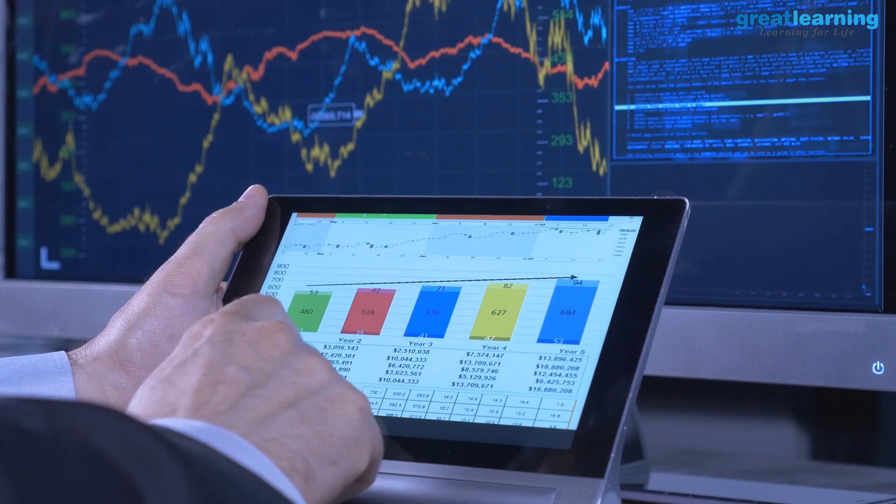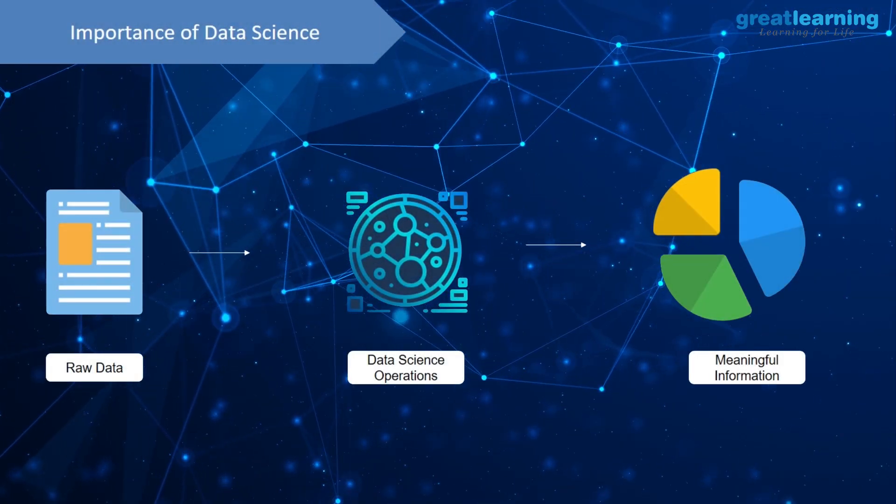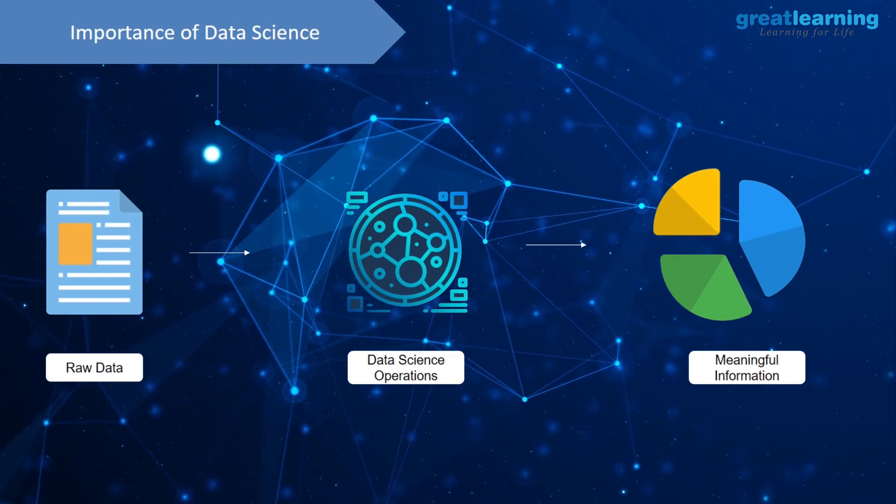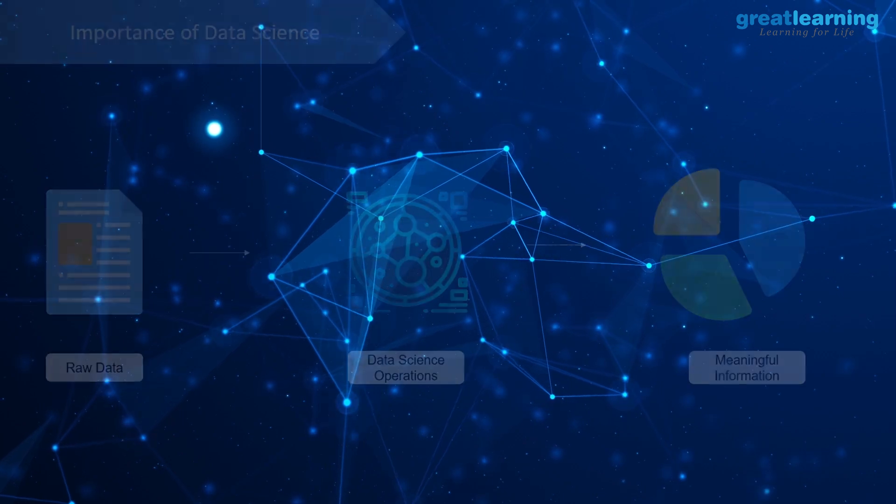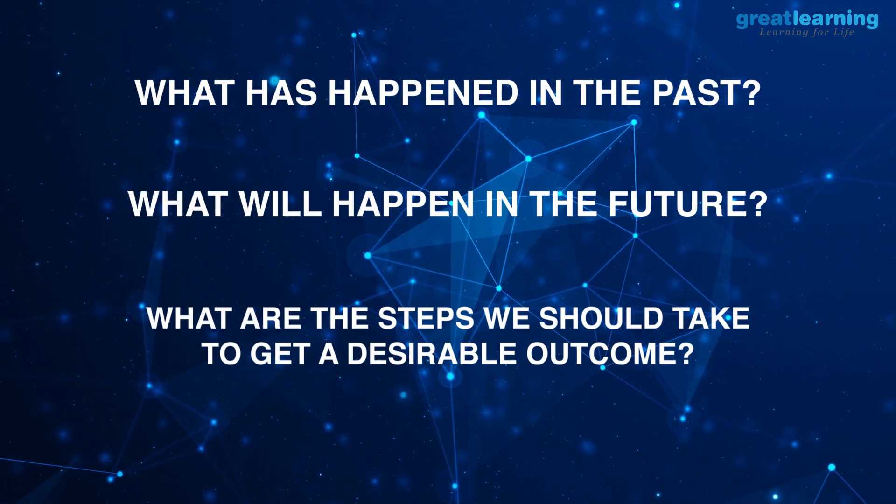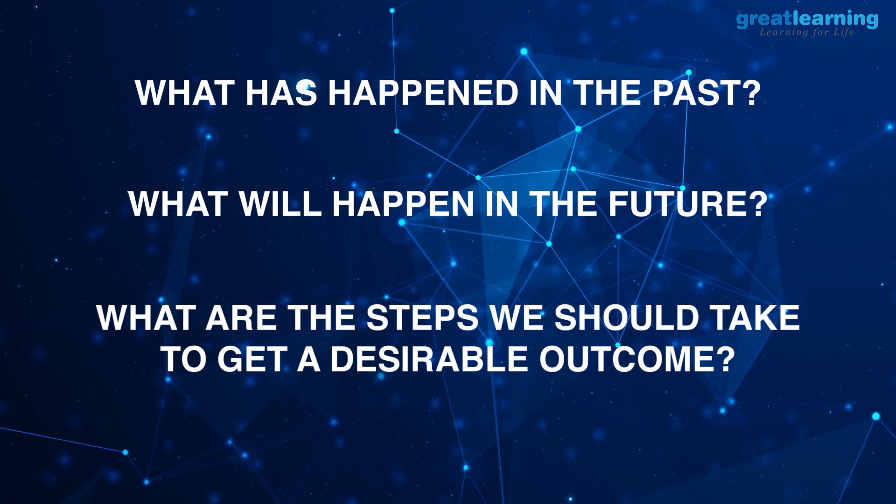So data science basically refers to application of certain operations on top of the raw data to generate meaningful information. Now this information obtained would help us in answering questions such as what has happened in the past, what will happen in the future, and what are the steps we should take to get a desirable outcome.